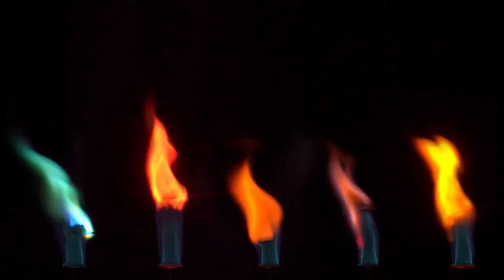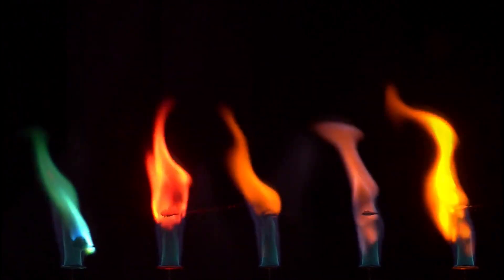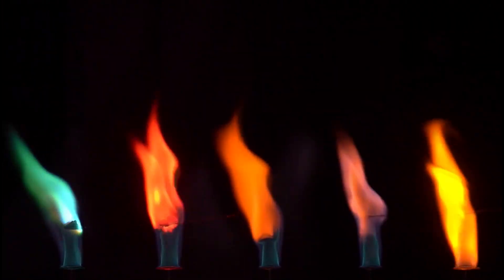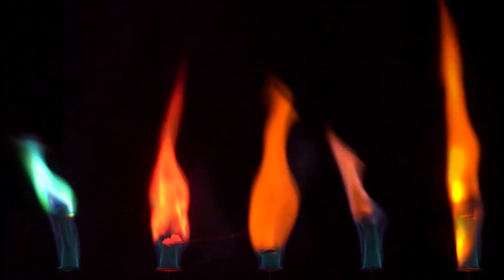When objects get hotter, they emit energy dominated by shorter wavelengths, changing color before our eyes. The flame of a blowtorch changes color from reddish to bluish as it is set to burn hotter. In the same way, the color of stars tells us their temperature.